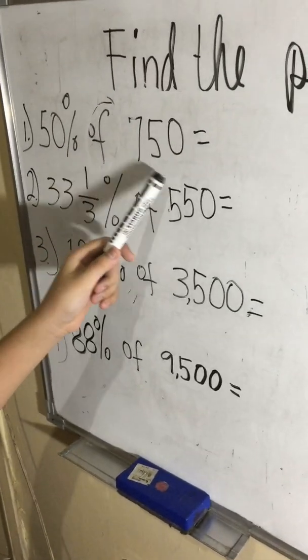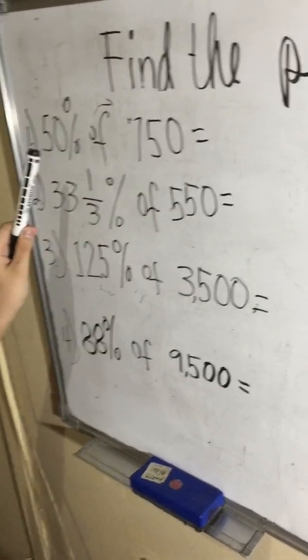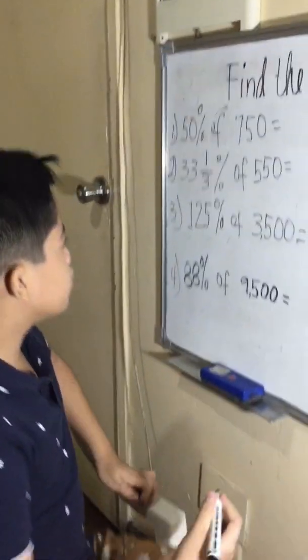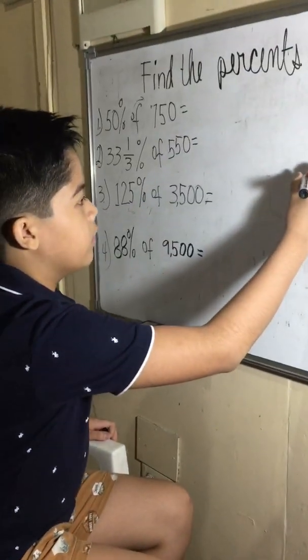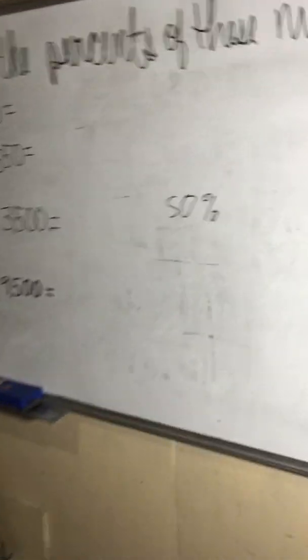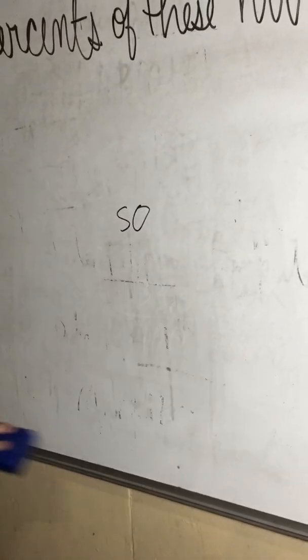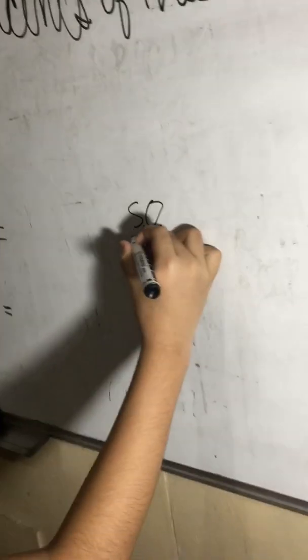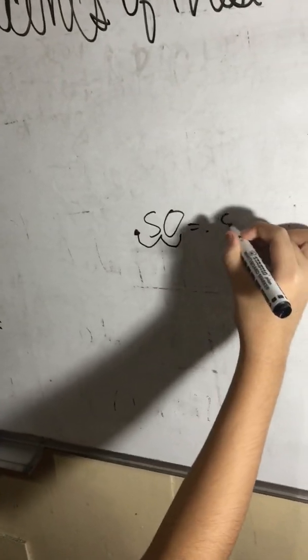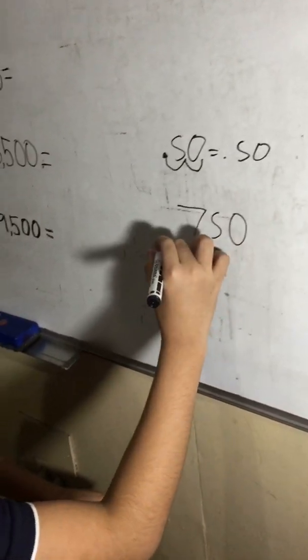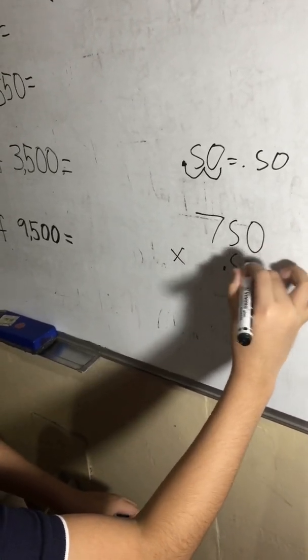Here in 50% of 750, 'of' means to multiply, so 50% needs to be multiplied by 750. To multiply that, you need to turn 50% into a decimal. To make this into a decimal, erase the percent sign and move the decimal point two spaces to the left, one, two, equal to 0.50. Now what we need to do is multiply 750 times 0.50 or 50%.